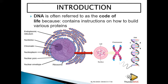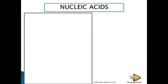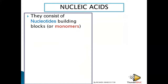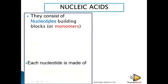DNA is an example of a nucleic acid. Nucleic acids are acids found in the nucleus, and they consist of nucleotides. Nucleotides are the building blocks — the monomers — of nucleic acids. In the exam they may ask: what is the smallest unit of DNA? The answer is a nucleotide.